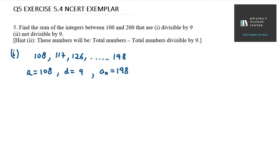So let's find number of terms first with the help of an. So a plus n minus 1 d. So an, the value of an is 198, a is 108 plus n minus 1, d is 9.